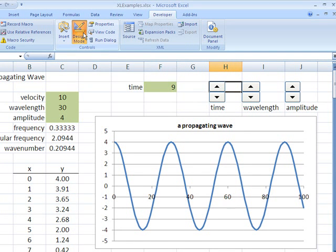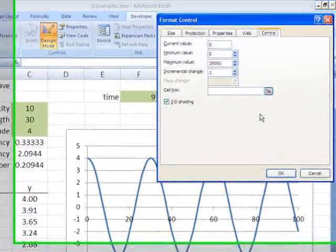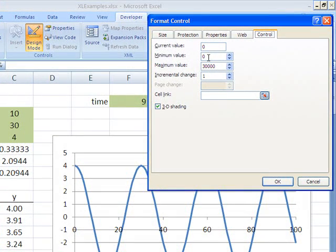So let's go back to design mode and fix up the other two. Right click on the control. Format control. This is the wavelength. The wavelength I want to have a minimum value of five and a maximum value of a hundred. Remember the span of the graph only goes from zero to a hundred. So a wavelength of a hundred would have the wavelength span the entire range of the graph. I can have it more if I want. Let's make it two hundred. Minimum value, if I make it too small, it won't really look like a sine wave very well. So minimum value of five, maximum value of two hundred.